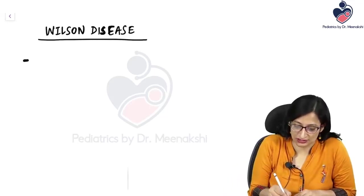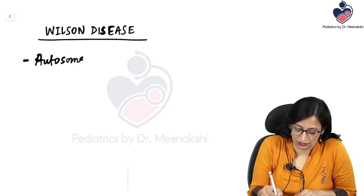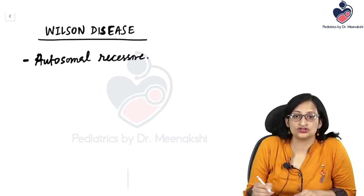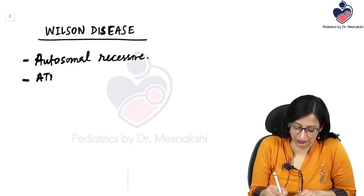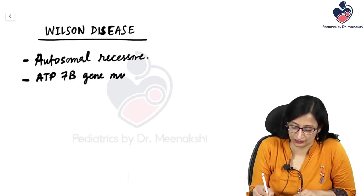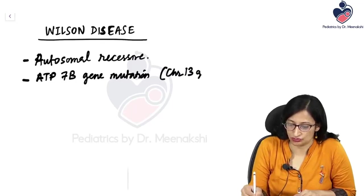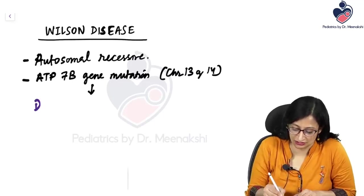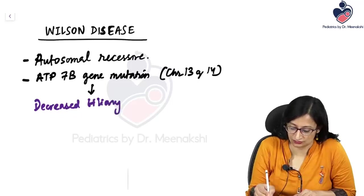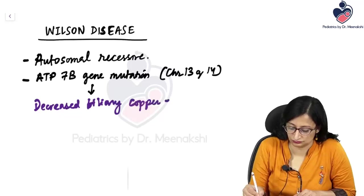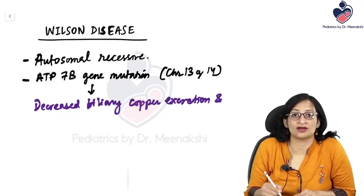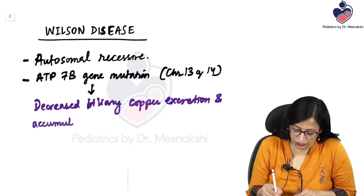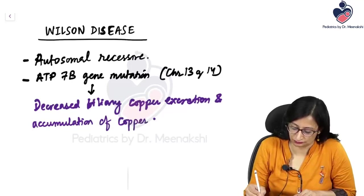Wilson disease is an autosomal recessive condition due to ATP7B gene mutation on chromosome 13q14. As a result, there is decreased biliary copper excretion and accumulation of copper in hepatocytes.